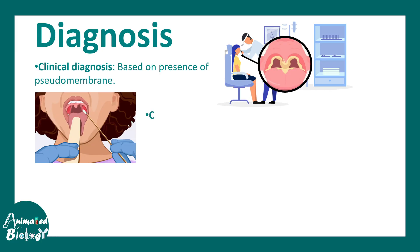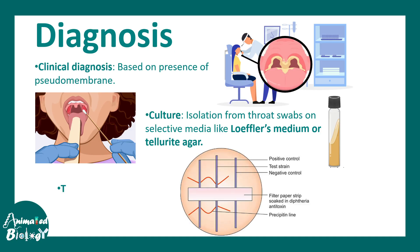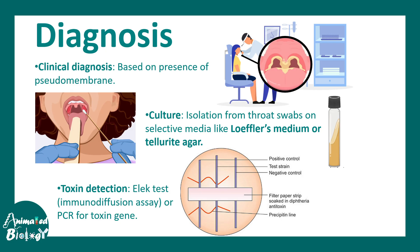Diagnosis includes clinical diagnosis through ENT examinations — the presence of the pseudomembrane is one of the key indicators of suspected Corynebacterium diphtheriae infection. Culture is the method to isolate the bacteria, using Löffler's medium or tellurite agar as media of choice. The diphtheria toxin can be detected by the Elek test, which is an immunodiffusion-based assay. The tox gene can also be amplified from patient samples by PCR, and a positive result confirms diphtheria infection.